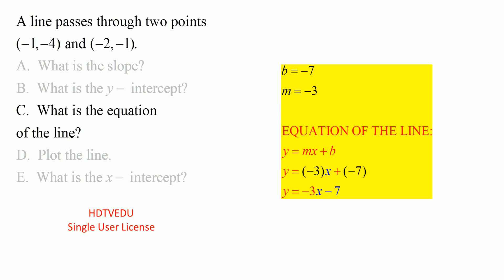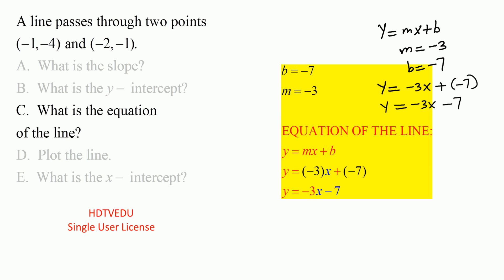Part c: what is the equation of the line? y equals mx plus b. We know m is negative 3 and b is negative 7. Substitute and you get y equals negative 3x plus negative 7, which is the same as y equals negative 3x minus 7. That is the equation of the line.